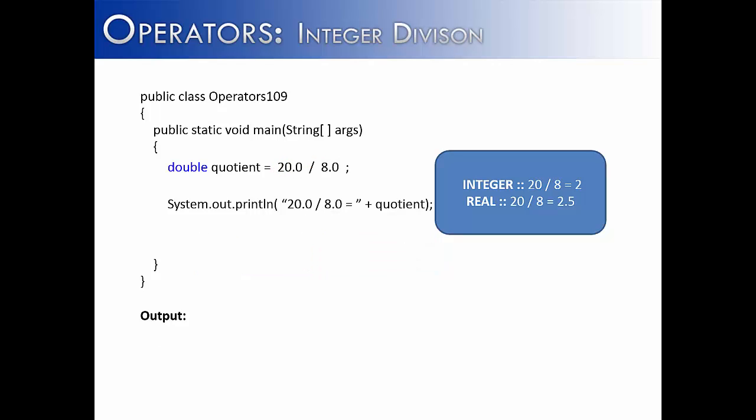What happens if both of the numbers are real numbers, 20.0 and 8.0? Well it's going to give us a real result, being 2.5.